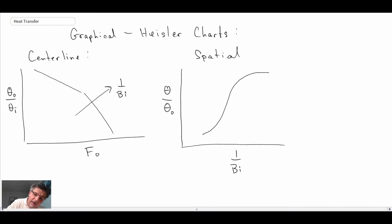And that's plotted as a function of one over the Biot number. And here we're going to have curves like that. And they are in order of increasing radial location, so as you go out towards the outer radius of your sphere.